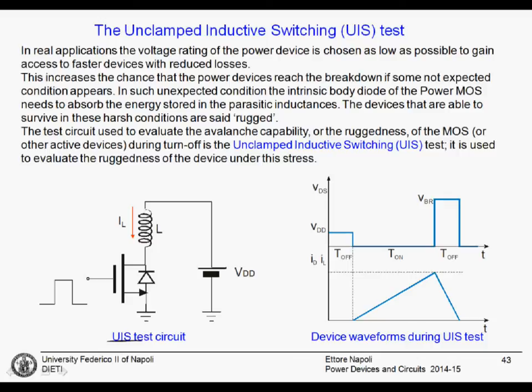An important aspect is that higher voltage devices show higher resistance and lower performance. As a consequence, there is a trend to choose devices with a voltage rating as close as possible to the limit without a big margin. This means that in quite common conditions, the device can enter the breakdown voltage region due to parasitic inductance or noise.